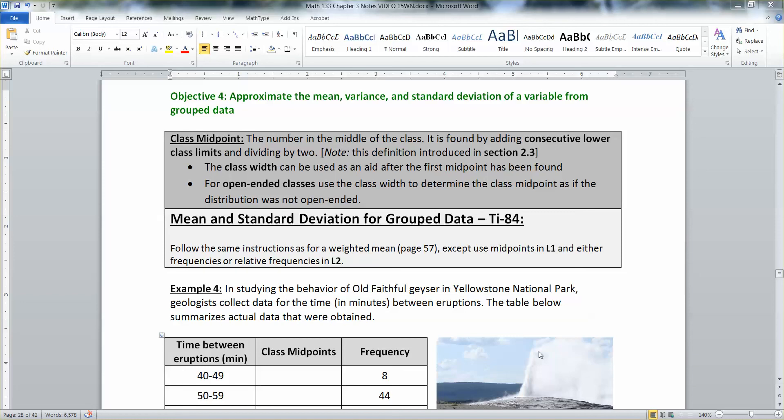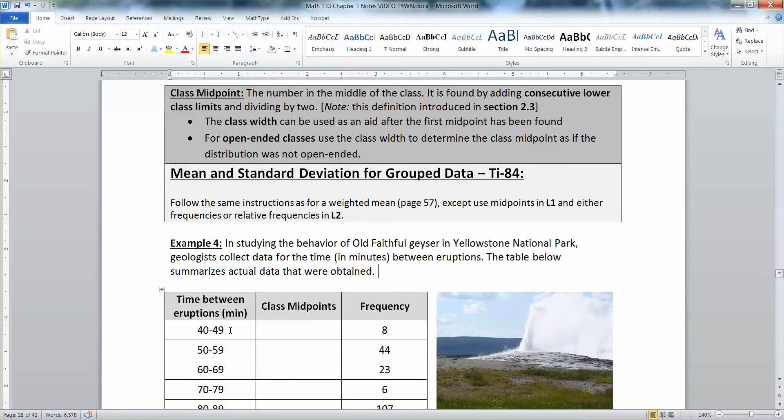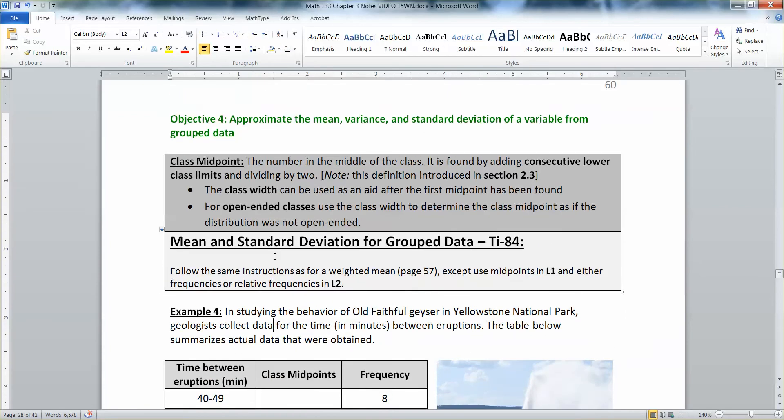Now that we know how to find the mean for a relative frequency distribution, like we found in the last video, we want to find the mean for a frequency distribution, and this time for grouped data. Before we get into that, let's remind ourselves of a definition from chapter 2, which is the class midpoint.